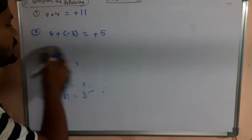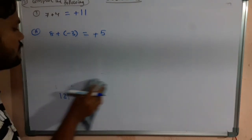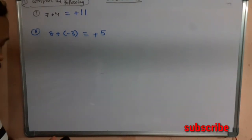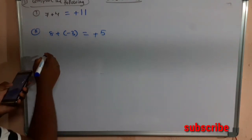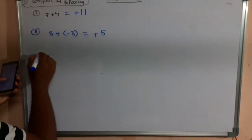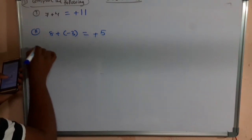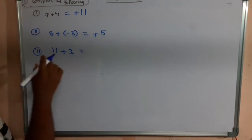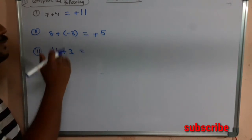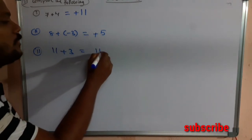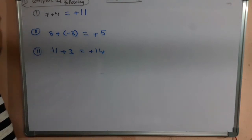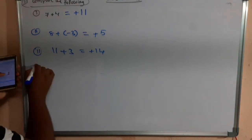The third question is 11 + 3. We know these two are both positive integers — like integers. Just add them and write the common sign: 11 + 3 = 14, and the common sign is positive. So the answer is +14.